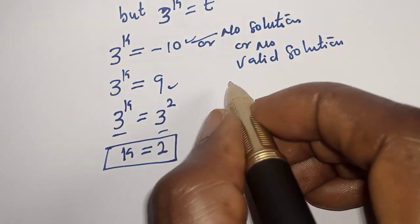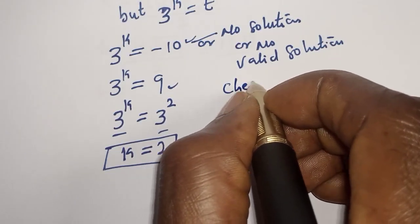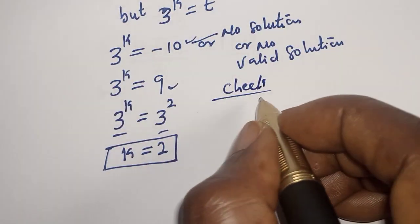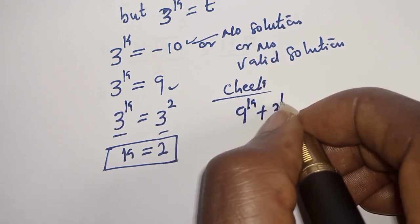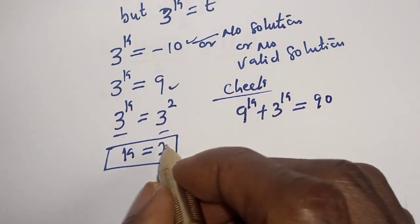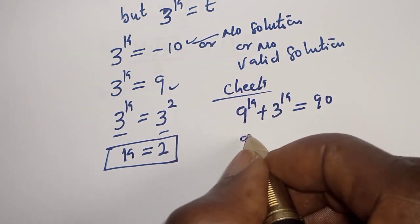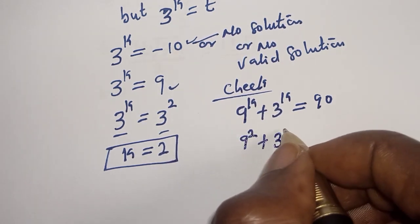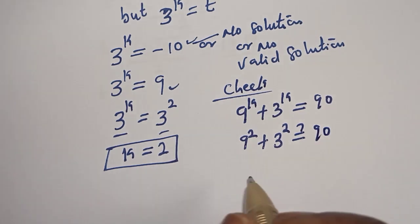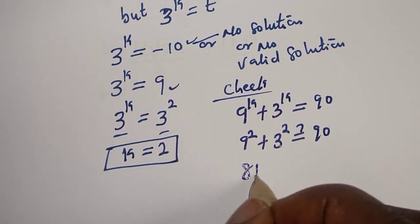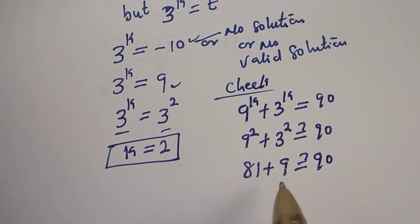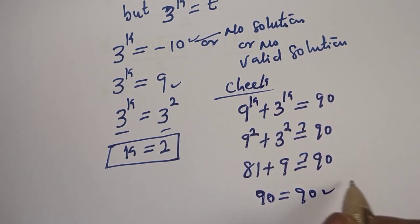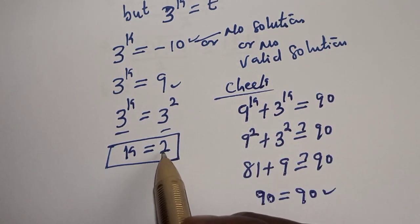Let's check to confirm if our answer is right. We have the given equation: 9 raised to the power k plus 3 raised to the power k equals 90. When k is 2, 9 squared plus 3 squared must equal 90. Then 81 plus 9 equals 90. We satisfy the given equation at k equals 2.